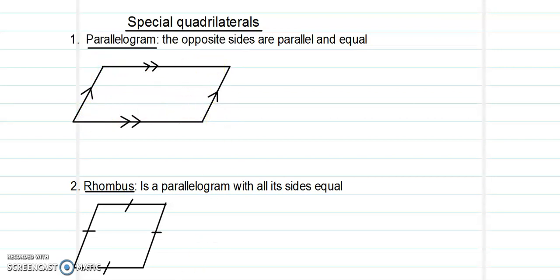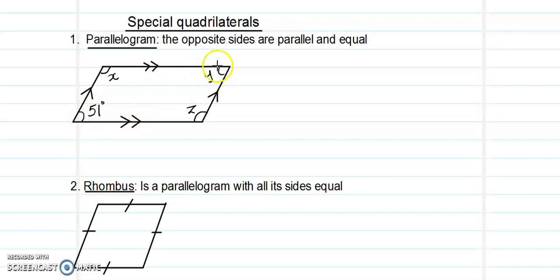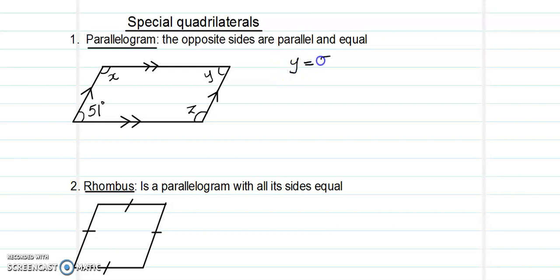So in this example, say this angle is 51 degrees, and we have x, y and z for the other three angles, and we are asked to find the letters. You know that the opposite angles are equal. Since it is a parallelogram, the opposite angles must be equal. So Y must be equal to 51 degrees, because Y is opposite to the 51-degree angle.